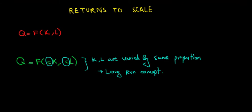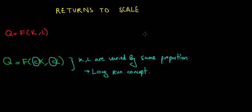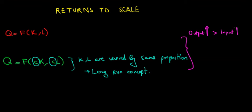Now we have three cases for returns to scale. The first case is that the new output — the increase in output — is going to be higher than the increase in input. Output increases more than the increase in input. In that case, we are describing the scenario of increasing returns to scale. We increase the scale of capital and labor by a certain proportion, but the return is even higher — the return is increasing relative to what we put in.